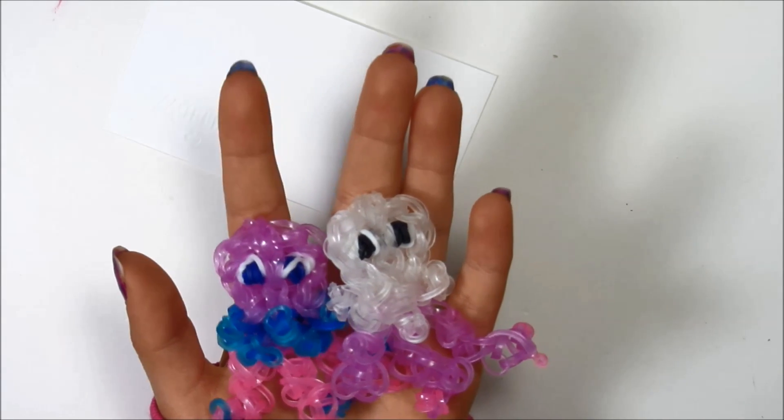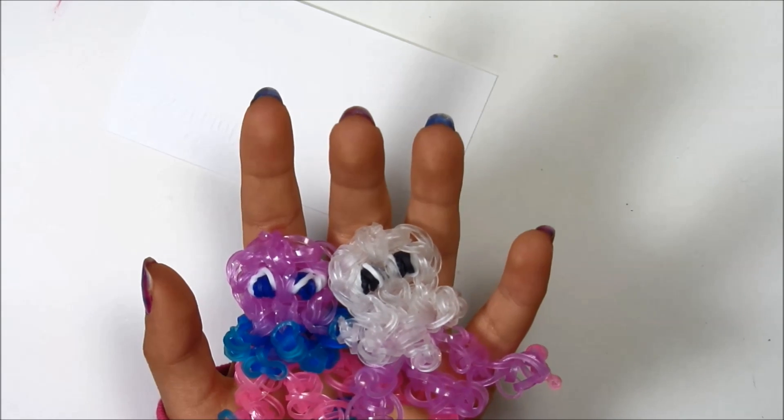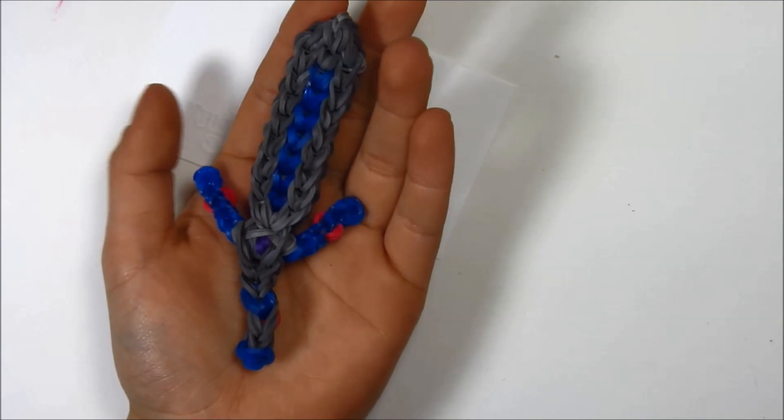These are her jellyfish, and they have these nice long tentacles, and they're different colors. This is the sword charm. I like it because it has this cool blue line and all these gems.